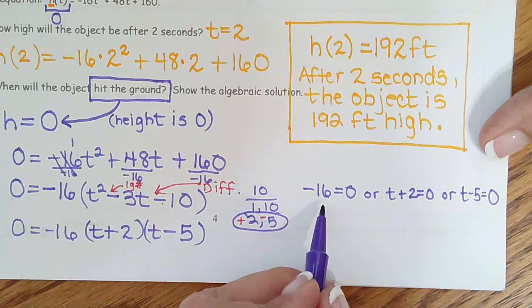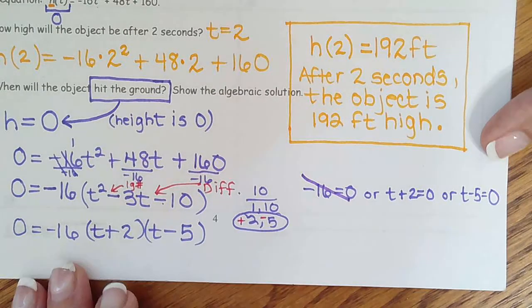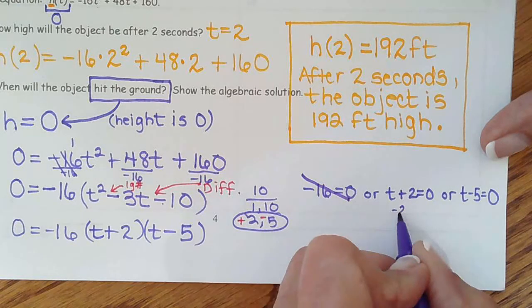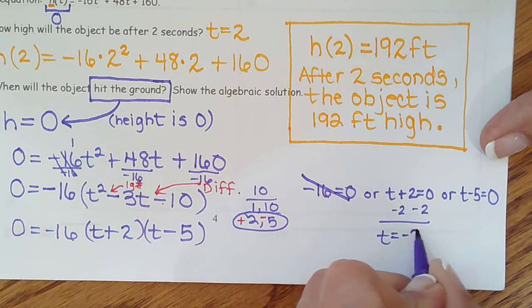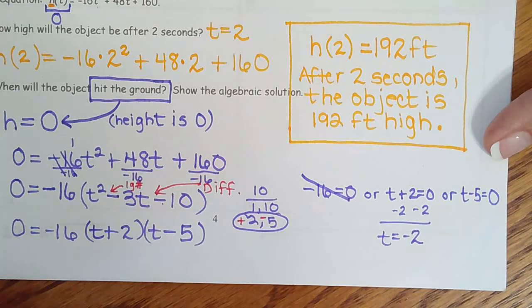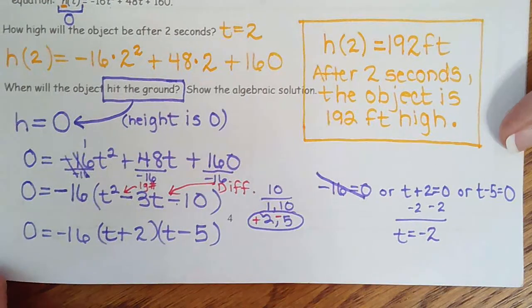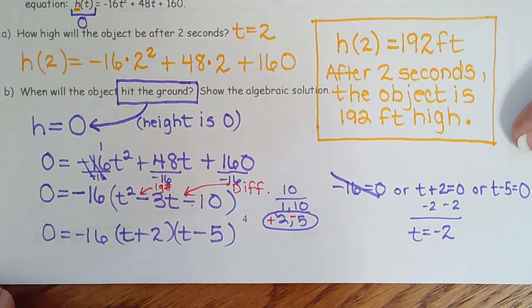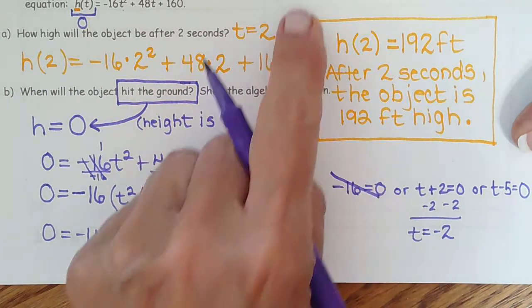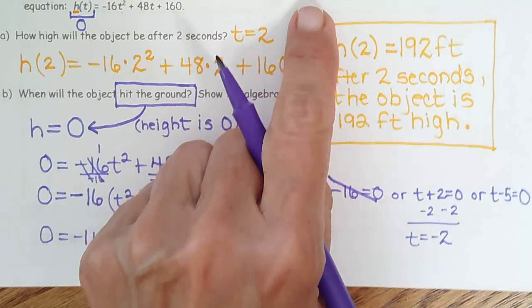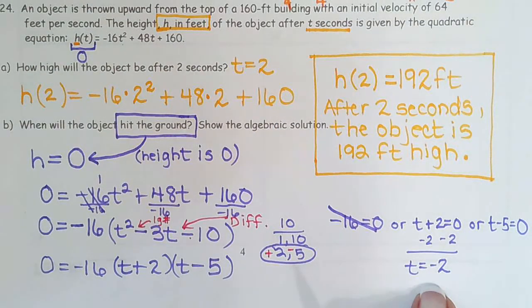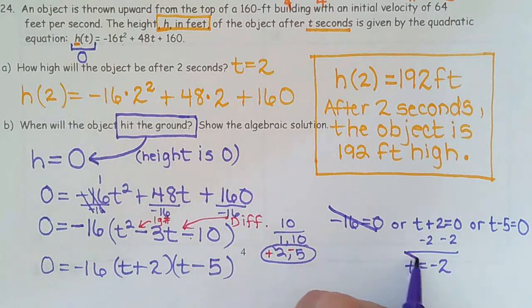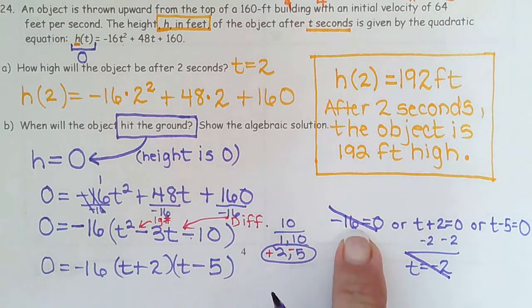So negative 16 can never equal 0. So throw that out. Subtract 2, subtract 2. So we get t equals negative 2. Remember how I told you on quadratics, generally one solution makes sense and one does not. So t is time in seconds. Can I have negative 2 seconds? No. So that one doesn't make sense. So this one is never true. 16 never equals 0.